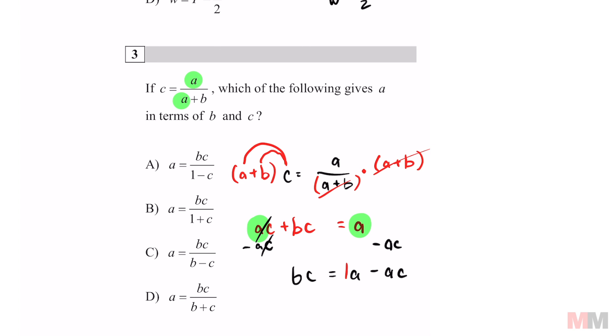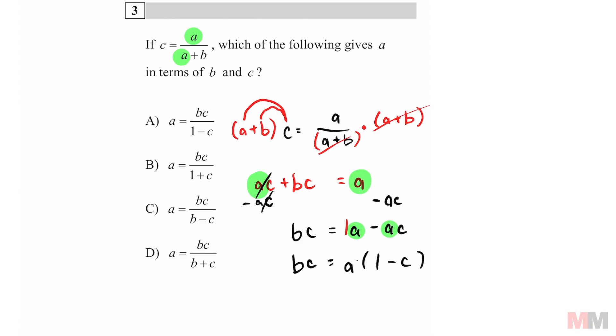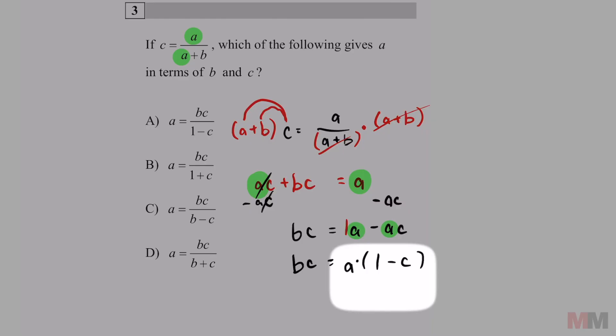Kind of like reverse distributive property. You can write an A on the outside and leave the leftovers in the parentheses. My leftover terms are one minus C. And since that bracket is being multiplied to A, you can get rid of it by dividing both sides by one minus C.